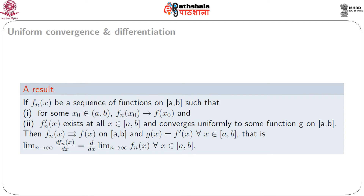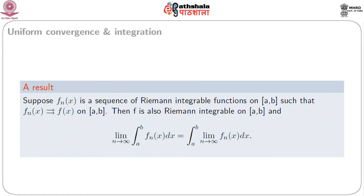Next consider uniform convergence and differentiation. Suppose f_n(x) is a sequence of functions on [a, b] such that for some x₀ ∈ (a, b), f_n(x₀) tends to f(x₀), and f_n'(x) exists at all x ∈ [a, b] and converges uniformly to some function g on [a, b]. Then g(x) = f'(x) for all x ∈ [a, b]. That is, the limit of the derivative of f_n(x) equals the derivative of the limit of f_n(x) — differentiation and limit operations become interchangeable as a consequence of uniform convergence.